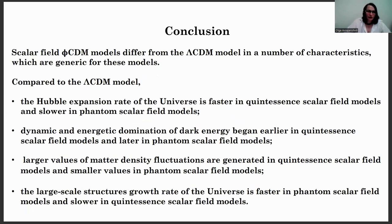In conclusion, I'd like to point out that the scalar field phi CDM models differ from the lambda CDM model in a number of characteristics which are generic for these models. Compared to the lambda CDM model: the Hubble expansion rate is faster in quintessence scalar field models and slower in phantom scalar field models; dynamic and energetic domination of dark energy began earlier in quintessence models and later in phantom models; larger values of matter density fluctuations are generated in quintessence models and smaller values in phantom models; and the large-scale structure growth rate is faster in phantom scalar field models and slower in quintessence scalar field models. Thank you very much for your kind attention.